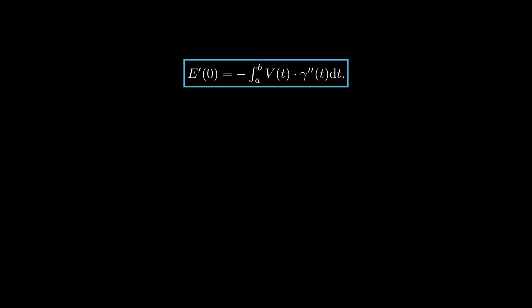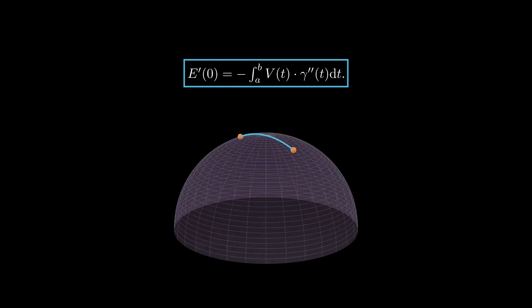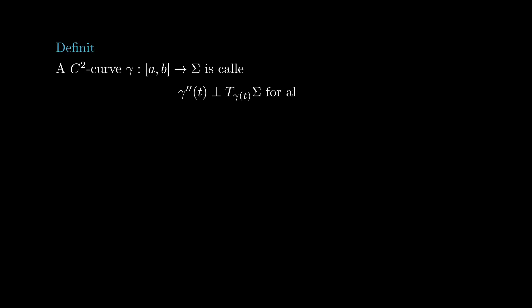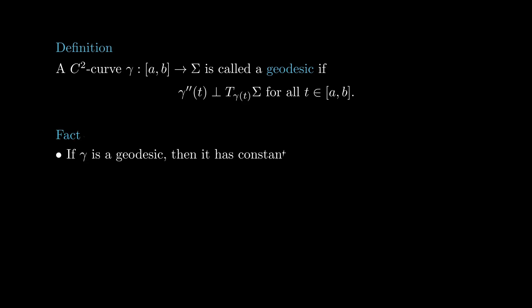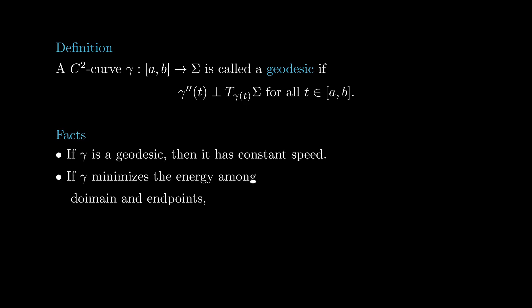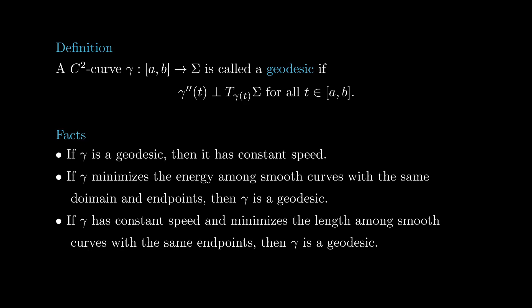This formula tells us that if we perturb gamma in the direction in which it is bending, the energy will decrease. In particular, if gamma minimizes the energy among curves with the same endpoints, then its acceleration points at all times in the direction perpendicular to sigma, otherwise we could perturb gamma in the direction that makes an acute angle with its acceleration, decreasing the energy. A C2 curve gamma is called a geodesic if its acceleration points in the direction perpendicular to sigma at all times. It is easy to check that a geodesic must have constant speed. A smooth minimizing curve parametrized by arc length is a geodesic.